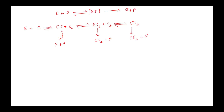Each enzyme-substrate complex can give the product individually at any time. So the kinetics goes on: the enzyme binds to one substrate, then it may bind to another substrate, and further to another. If an enzyme has three different binding sites, this process continues.